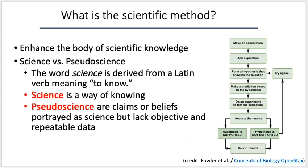So what exactly is the scientific method? The scientific method is basically a series of steps used by biologists and other scientists to enhance the body of scientific knowledge. Before we look at each individual step, it's important to understand what the scientific method is used to investigate. Science is basically a way of knowing — in biology, it's about learning about life and natural phenomena, and the scientific method can help us learn about natural phenomena.